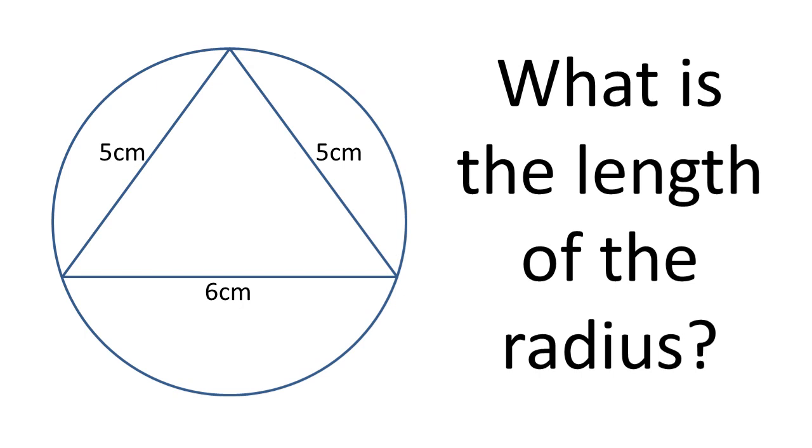We're given a circle containing an isosceles triangle with two sides of 5cm and a base of 6cm. We need to find the length of the radius of the circle.